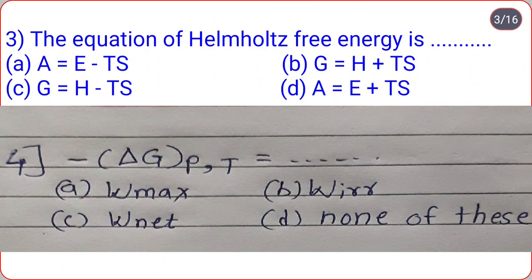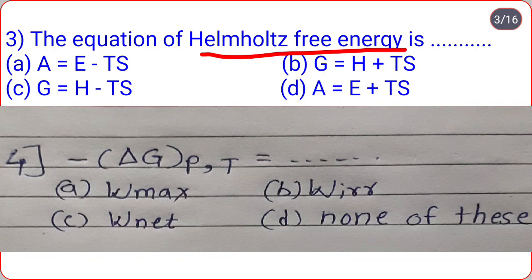The equation of Helmholtz free energy is — A = E − TS, G = H + TS, G = H − TS, or A = E − TS. The correct option is A, that is A = E − TS.